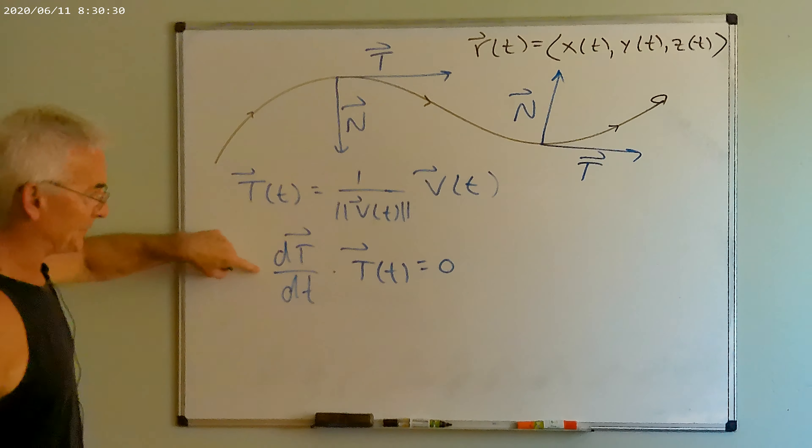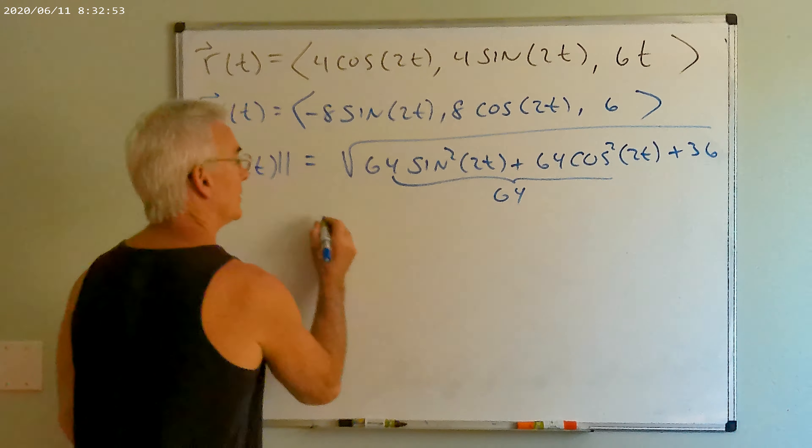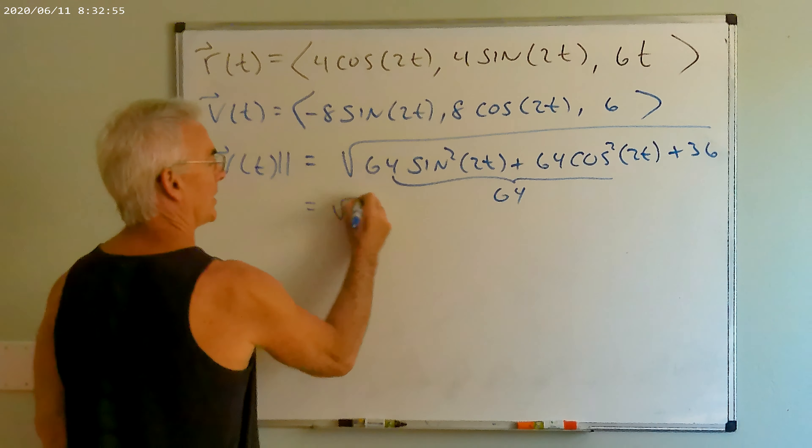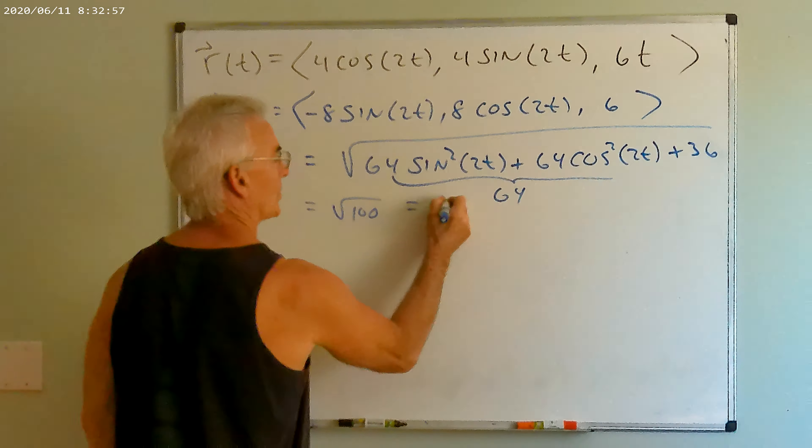The easiest way to think of this: if I'm traveling on a line, then all of my motion is in the direction of the tangent vector. If I'm traveling in a circle, all of my motion would go this way, and all other cases will be some combination of the two. Because this is in the direction of the velocity vector, we define the unit tangent vector T(t) to be the unit vector in the direction of the velocity vector — so it's a scalar multiple of the velocity vector.